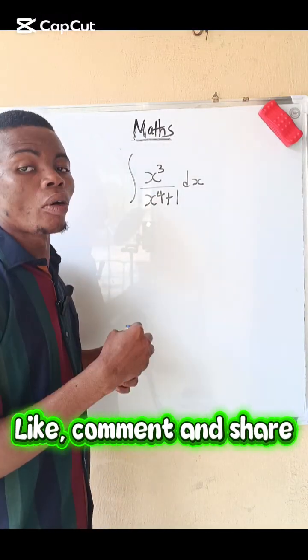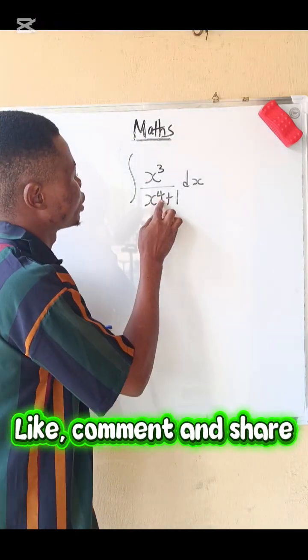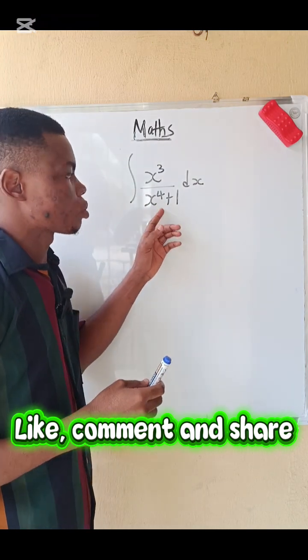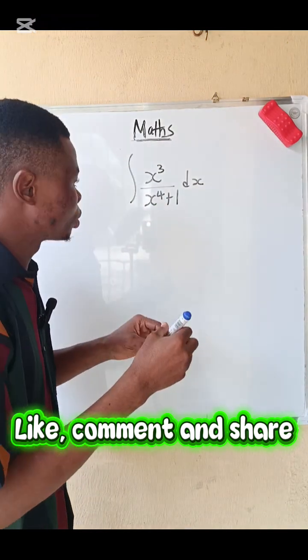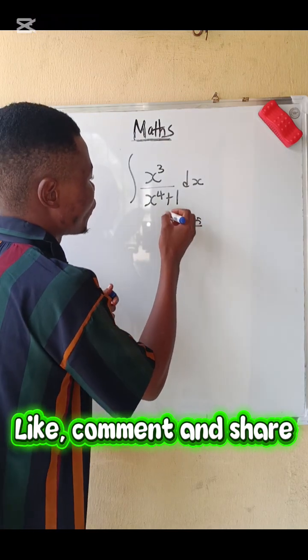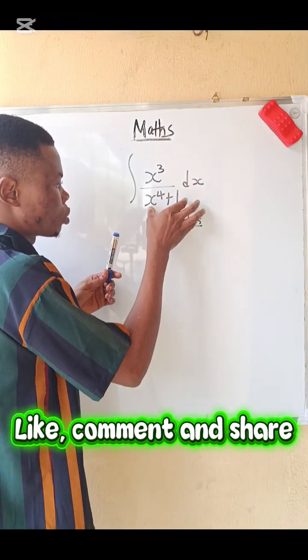Integrate x cubed over x to the power of 4 plus 1 dx. We are asked to integrate this. Solution: The first thing you have to do is to substitute, to replace this with a variable.